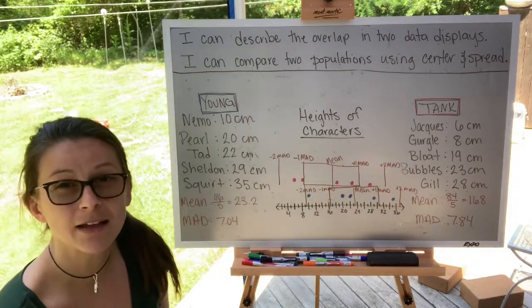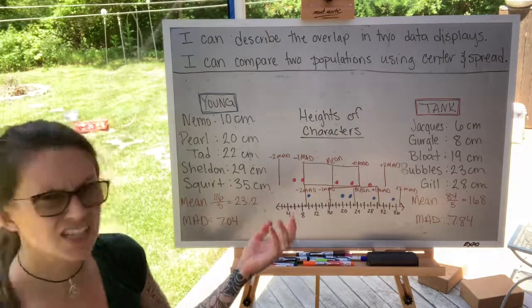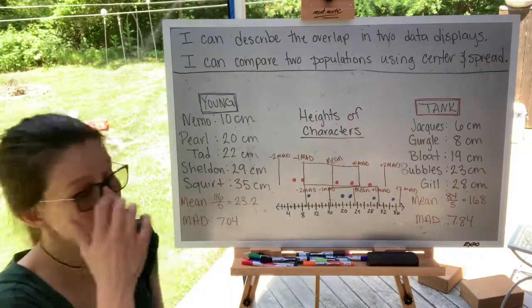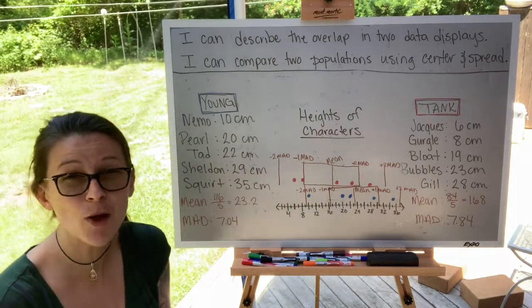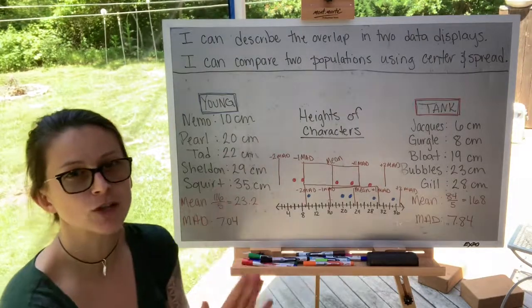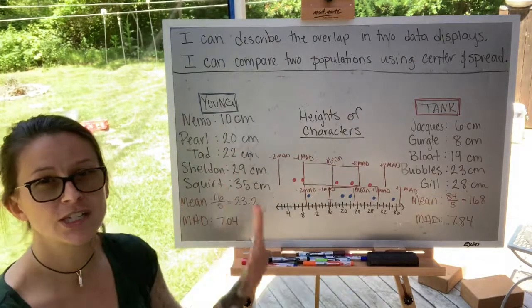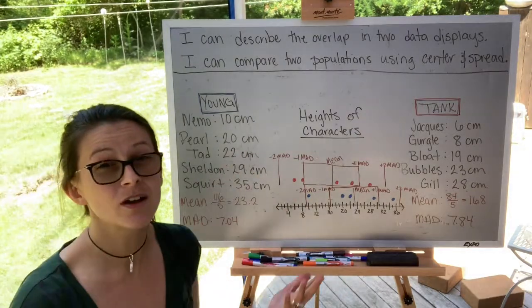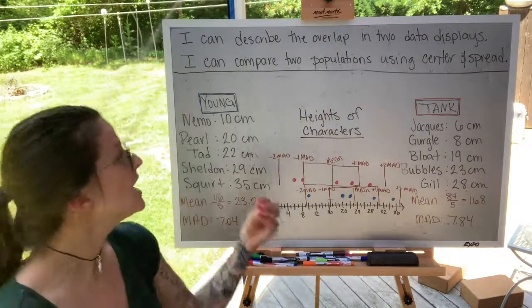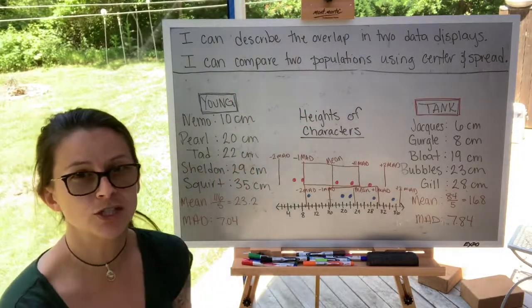In each population, there's not more than 10 characters that fit that description. So this is a decently sized sample for the population size. Now the population size is so small that it might be more realistic to include all of the characters that fit these descriptions into our samples. However, for the sake of this video, we're just going to stick with five. Now the more characters you have in your sample, the more reliable the data, but the idea here is less about sampling and populations and more about comparing overlap and using measures of center and spread.